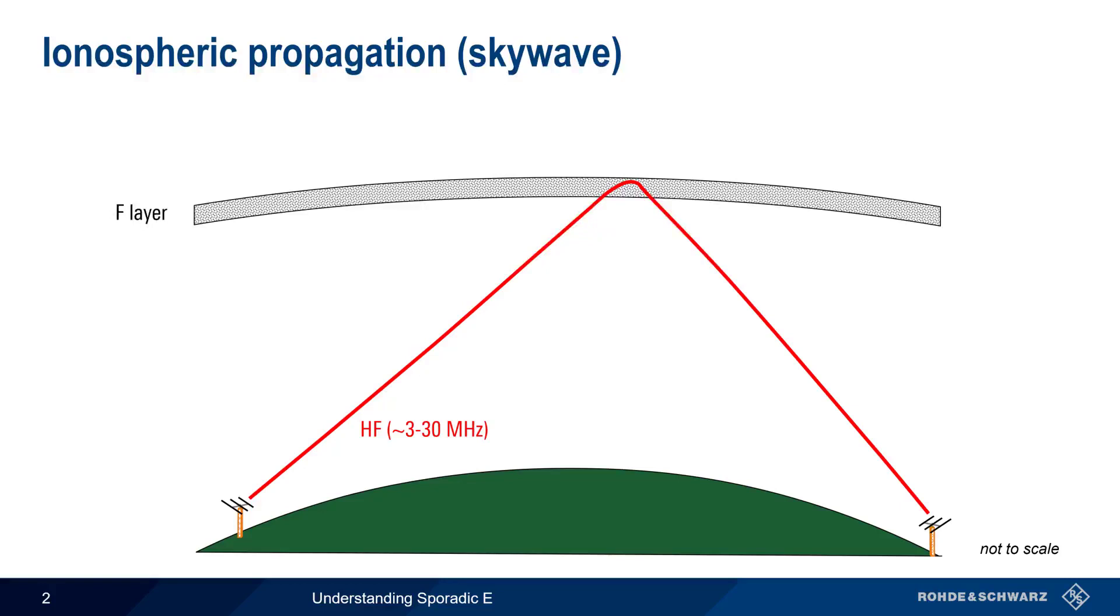However, at VHF and higher frequencies, signals reaching the ionosphere are generally not refracted back to Earth, and simply pass through the ionosphere and into space.